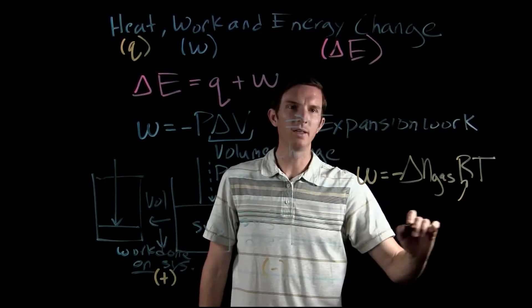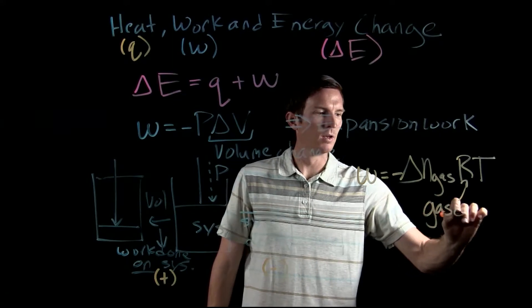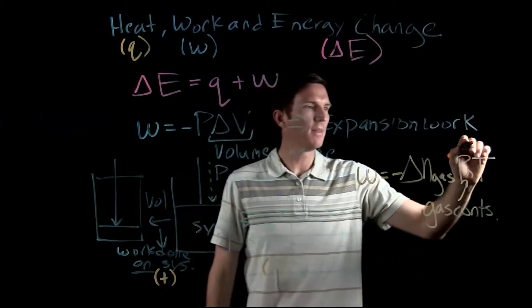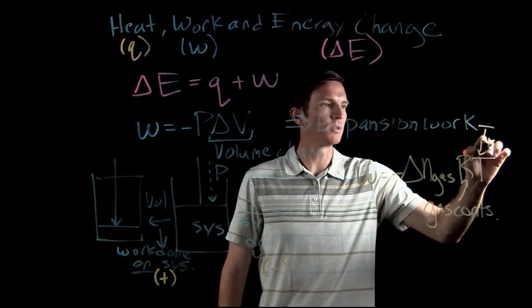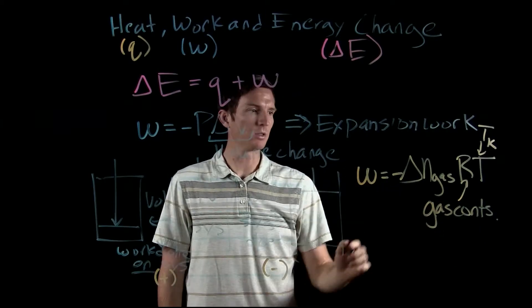R is the gas constant. We have our gas constant, and then T is our temperature in Kelvin. Remember our gas constant has units of Kelvin as the temperature.